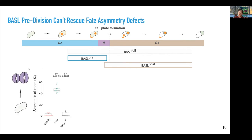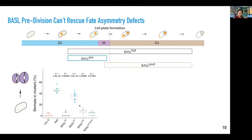We used these different basal expression variants to rescue the basal mutant and assess what phenotype can be rescued by different variants — as a way to understand the function of basal before and after asymmetric cell division. Looking at the stomata pair phenotype first, supplying basal in the normal expression window with the full variant mostly rescues the stomata pair phenotype. To our surprise, supplying basal only before asymmetric cell divisions is not sufficient to rescue the phenotype. However, expressing basal after asymmetric cell division mostly prevents the formation of stomata pairs. This result suggests that the post-division basal polarity is the one controlling cell fate separation in ACD daughter cells, which is largely different from other cell polarity models established in animals.